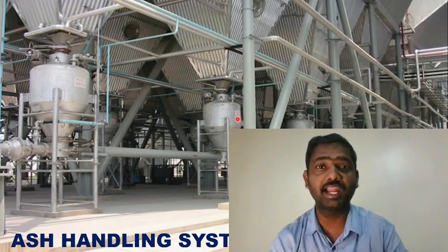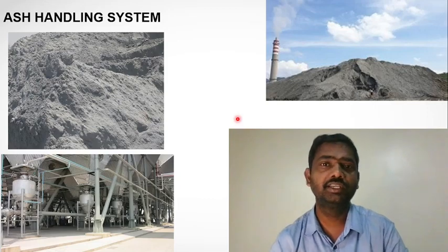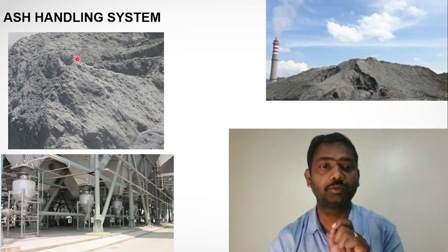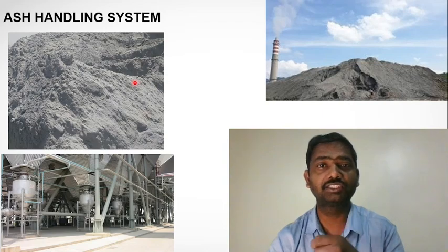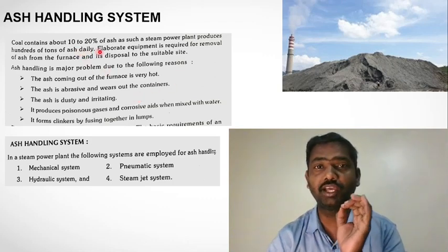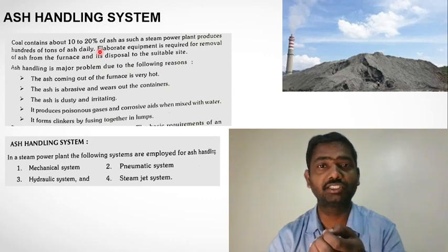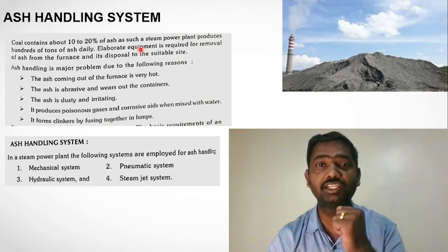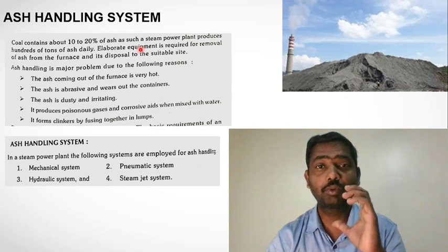So today we will talk about the Ash Handling System. In coal-based thermal power plants, a large amount of ash is generated. This ash management is a big task for power plants. Different handling systems are used. Coal-based thermal power plants produce around 10 to 20% ash, and daily there are tons of ash generated.